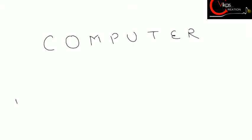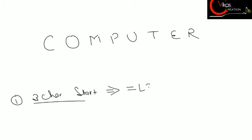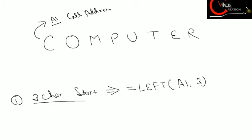For the first question — fetch 3 characters from the start — our formula will be equals to LEFT(A1, 3), where A1 is the cell address containing the word 'computer'. This function will return 'com', meaning it extracts the first 3 characters of the word.